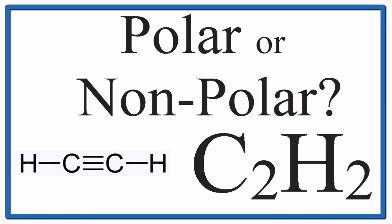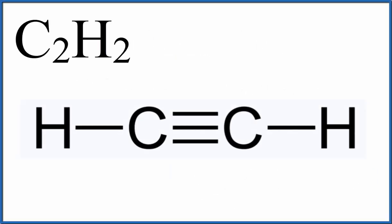we'll look at the Lewis structure here. This will tell us where the atoms and those electrons are arranged around the molecule. It gives us an idea about the shape and therefore the polarity. So here's the Lewis structure for C2H2.